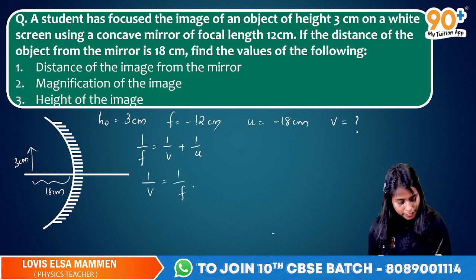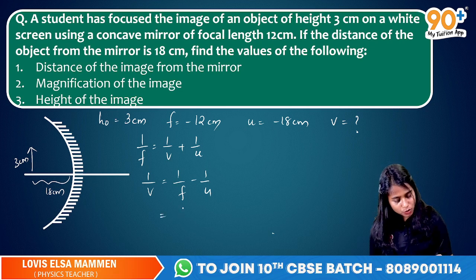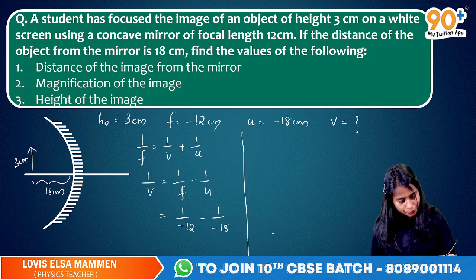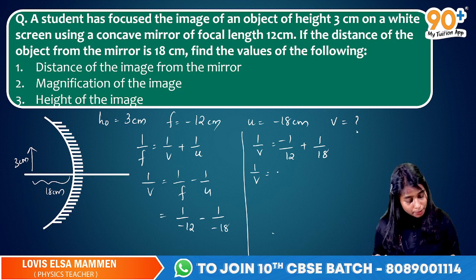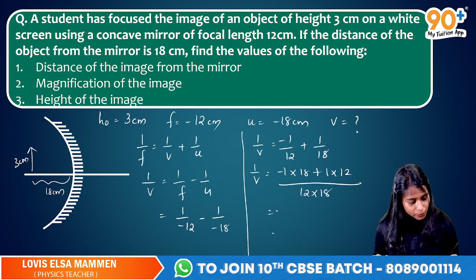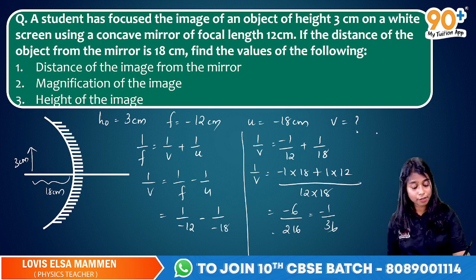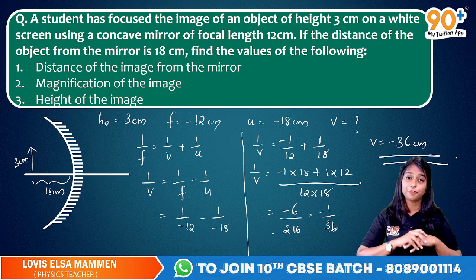So 1 by V is equal to 1 by F minus 1 by U. Substituting, that is 1 by V is equal to minus 1 by 12 plus 1 by 18, which gives minus 6 by 216, which is equal to minus 1 by 36. Therefore V is equal to minus 36 centimetre. So the first part is answered — the distance of the image from the mirror is 36 centimetre.